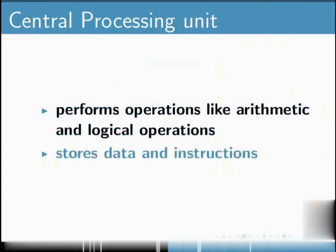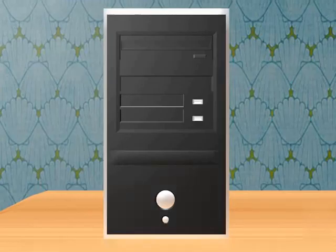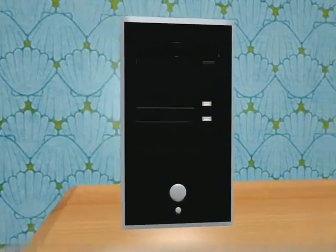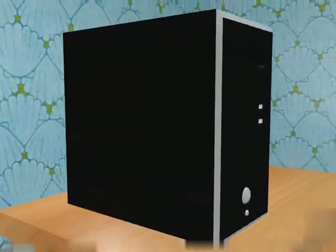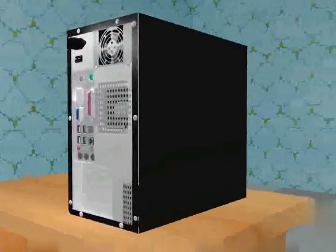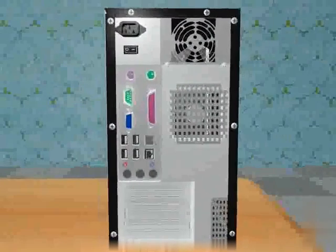It stores data and instructions. Typically, the central processing unit or CPU looks like this. It has many ports in the front and at the back of the unit. We will learn about them in a little while.